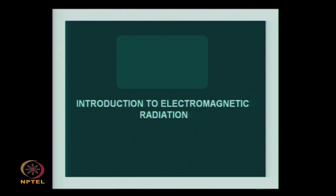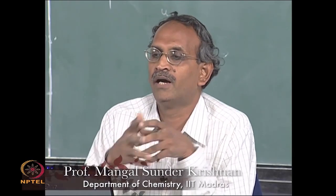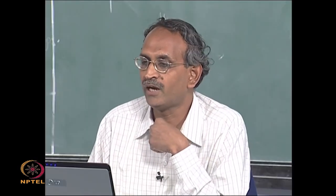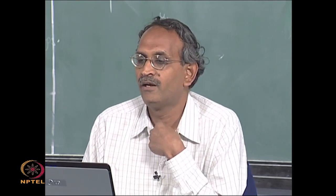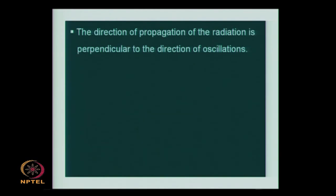Let me introduce the properties of electromagnetic radiation very simply in a few minutes. Essentially, to bring to your recollection, electromagnetic radiation consists of oscillating waves of electric and magnetic fields. The electric and magnetic fields oscillate perpendicular to each other and also perpendicular to the direction of propagation of the radiation, as you see here in the animation.